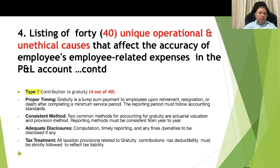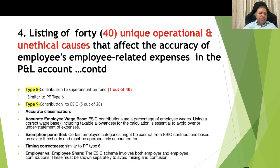Type 8, contribution to superannuation: these aspects are similar to those shared about the provident fund, so not repeated. Type 9, contribution to ESIC: this is primarily for low-salary blue-collar workmen and relates to Employee State Insurance premiums paid. Causes include: accurate classification; accurate employee wage basis — ESIC contributions are a percentage of employee wages and using the correct wage base is essential to avoid over- or understatement; exemption permitted — certain employee categories may be exempt from ESIC contribution based on salary thresholds; timing correctness similar to PF; and employer versus employee share — ESIC involves both employer and employee contributions which must be shown separately to avoid confusion.